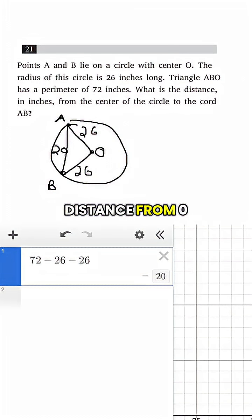Now to find the distance from O to AB, all I have to do is split this up into a right triangle, where then this would be 10, and this would also be 10, and then I could use the Pythagorean theorem.